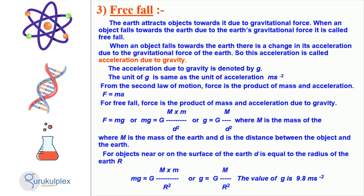Such acceleration is referred to as acceleration due to gravity, given as g and equal to the product of the mass of the earth, the distance between the object and the earth, and the square of the earth's radius. The acceleration due to gravity on the surface of the earth is 9.8 meters per second squared.